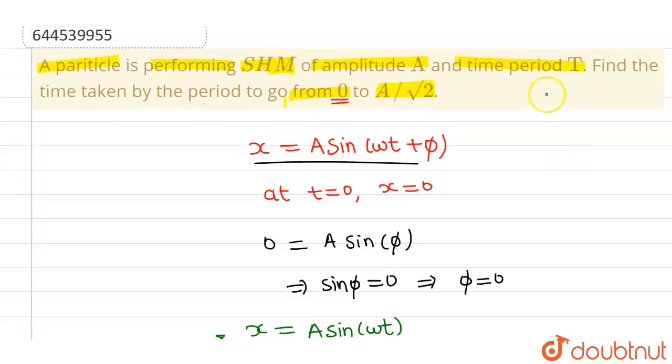Now again, we know that we are given with time period T. So T can be written as 2 pi over omega. So from here, I will be getting value of omega as 2 pi over T.